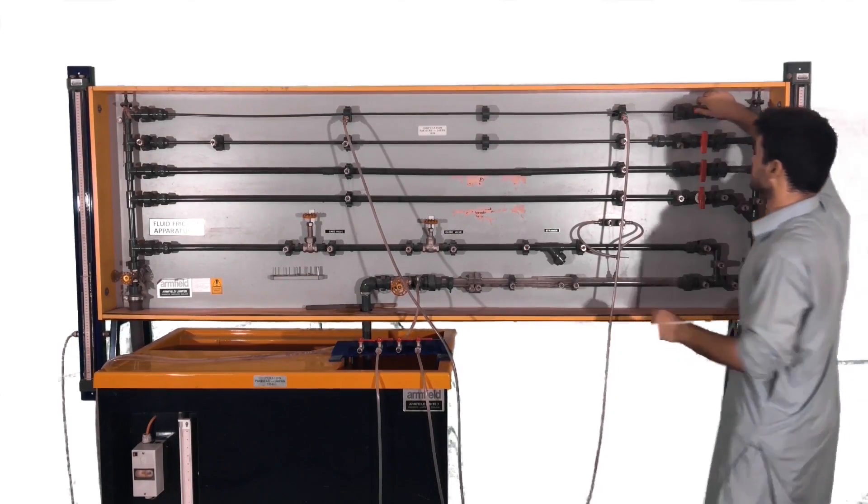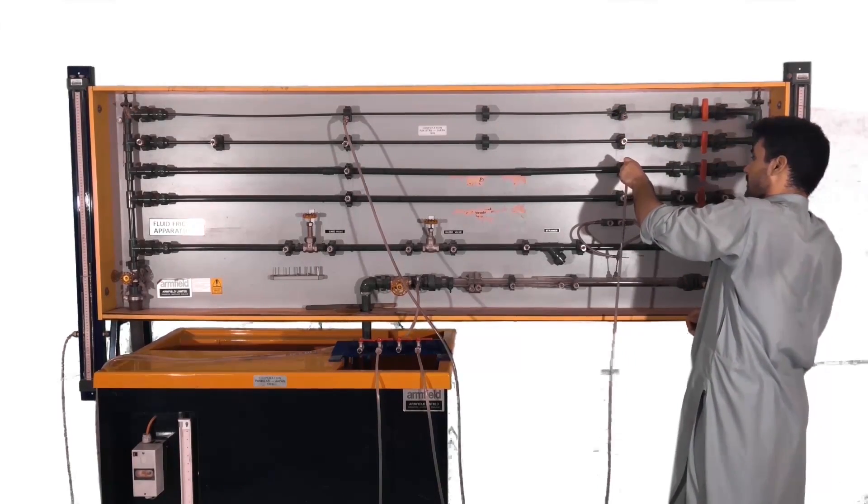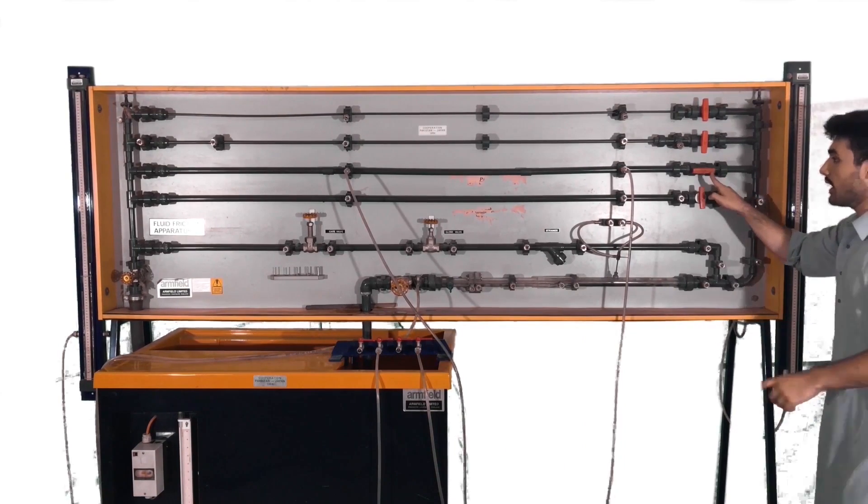If we want to perform this test on some other pipe, we simply remove the clips and place them in the other tapping points of another pipe, and open the control valve and close the rest.